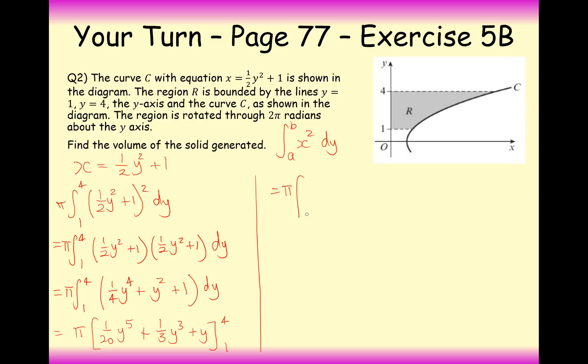So now all we need to do is substitute in the boundaries. So it's 1 20th of 4 to the power of 5 plus 1 3rd, 4 to the power of 3 plus 4. And then we're going to be subtracting 1 substituted in. So that's going to be 1 20th plus 1 3rd plus 1. 1 substituting in is quite easy because you're just substituting in 1, so all of the powers just simplify to 1. And once we do this, we get an answer of 1,503 pi all over 20. So there we are, and that's the answer to this question here then.